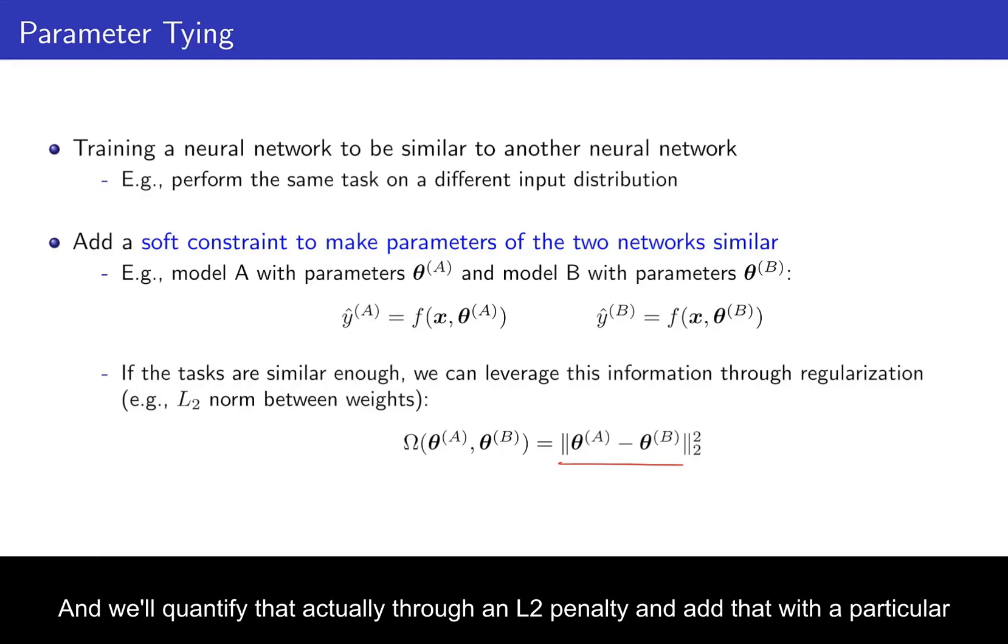And add that with a particular strength for optimization of network A, or of network B, or of both of their weights in order to basically exploit that we have additional data from a related task. And we can use that to regularize each of the individual tasks and get better generalization that way.